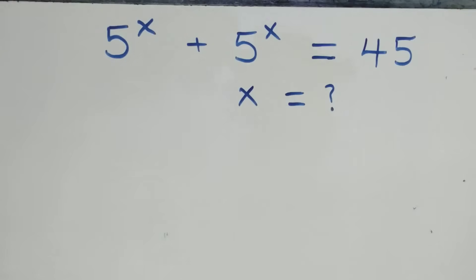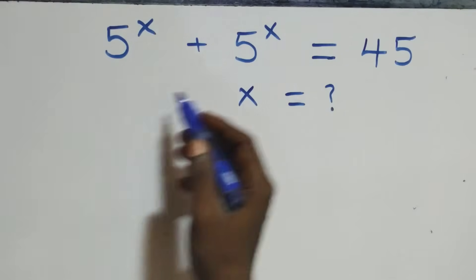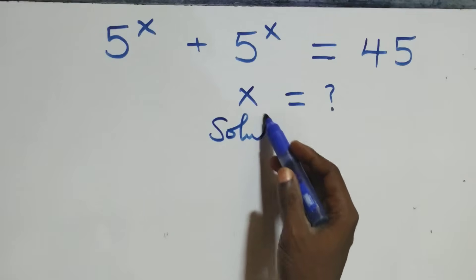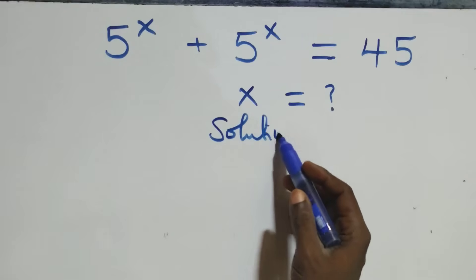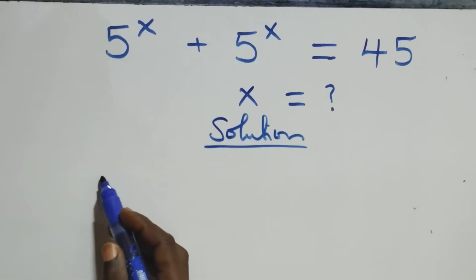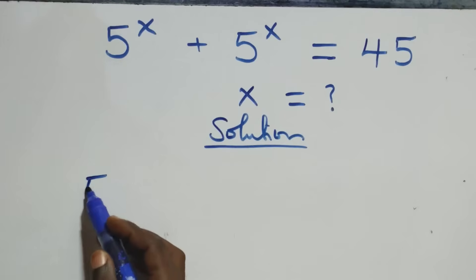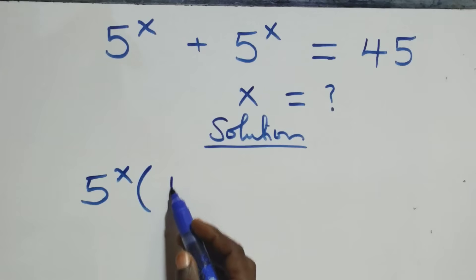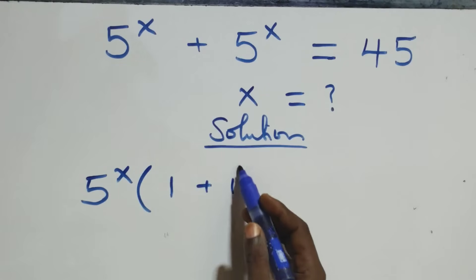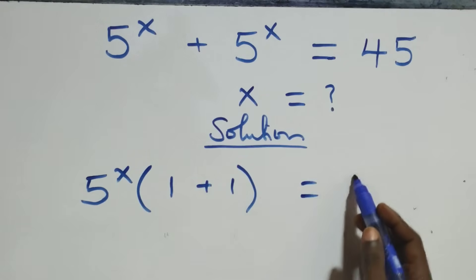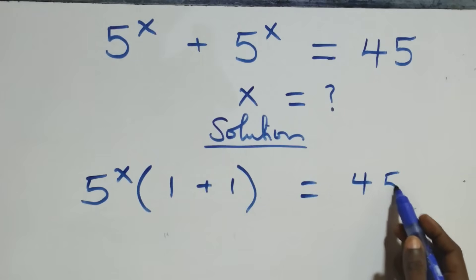Hello, you're welcome. Here we solve this nice exponential equation. From what we have here, we factor 5 raised to power x out — that is, we have 5 raised to power x into bracket 1 plus 1 in bracket, then equals to 45.